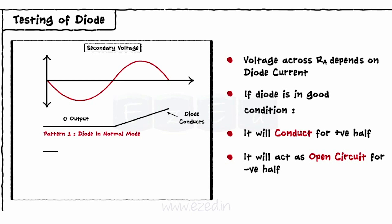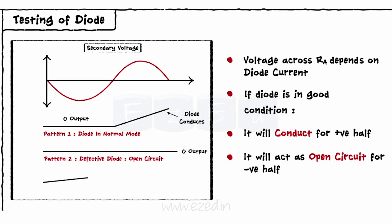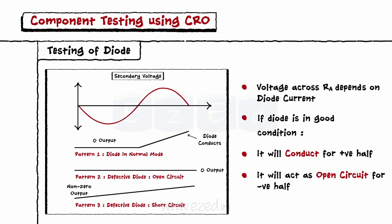If the diode is open — that is, if it is faulty — it will never conduct and we will not get any output. If the diode is faulty and acts as a short circuit, then we will get a non-zero output for the negative cycle of the secondary voltage also.